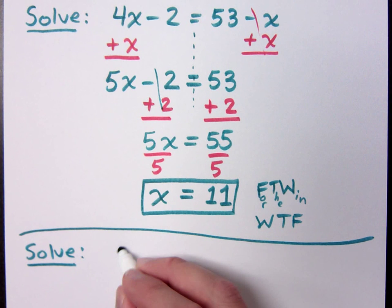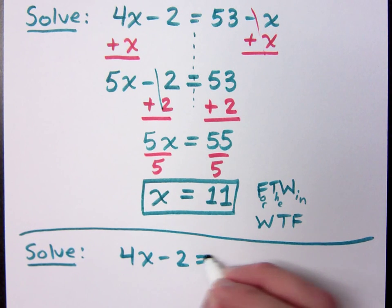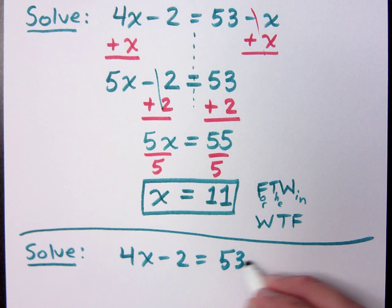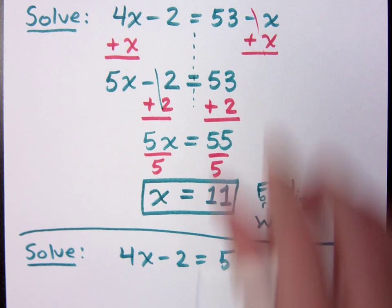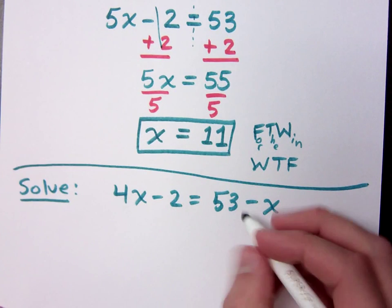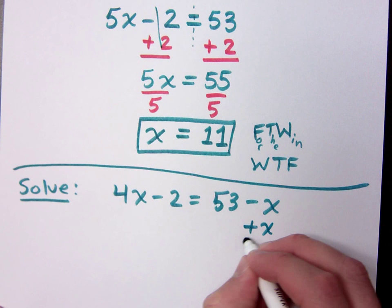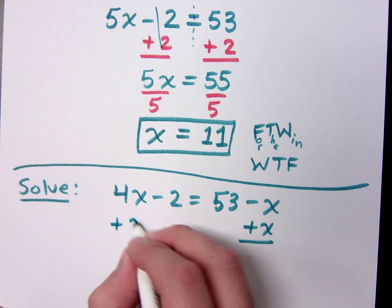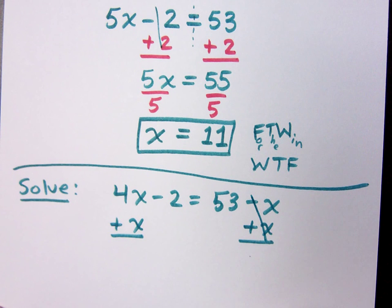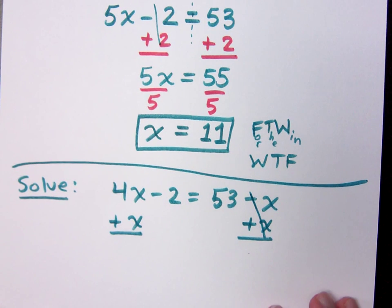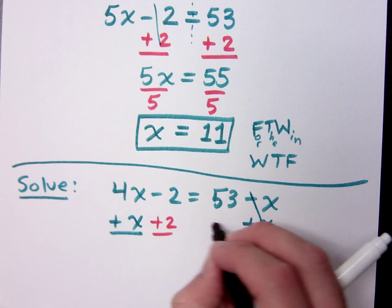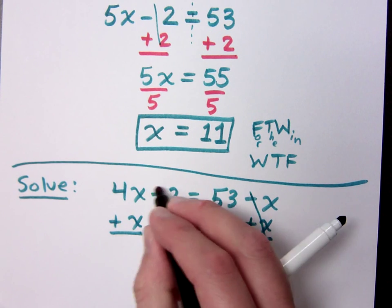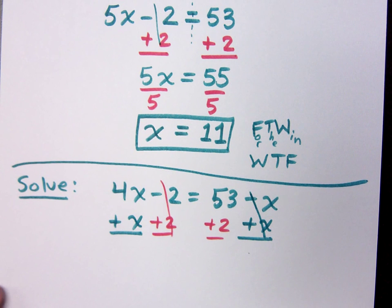Now I want us to solve this equation the same way, but a lot of times you may see the steps written like this. We may do both of these guys right here in the same step. You may see me add x on both sides. And at the same time that I'm adding x, moving x's to the left, I'm going to go ahead and add 2 to move the constants to the right.